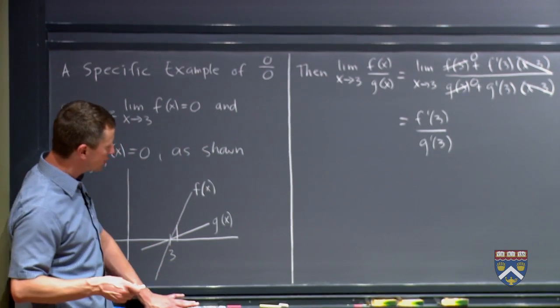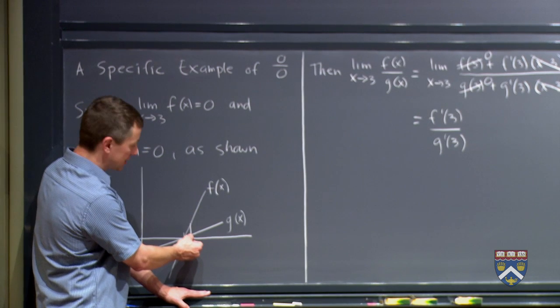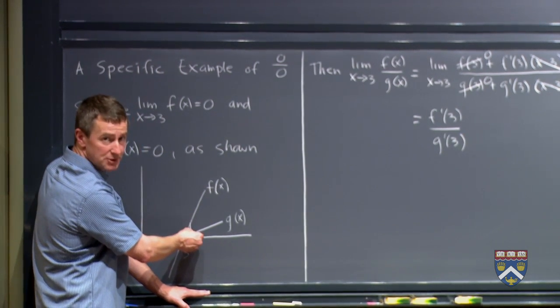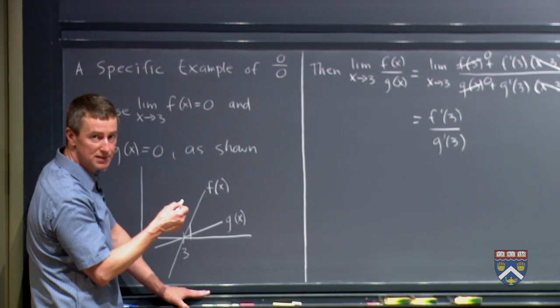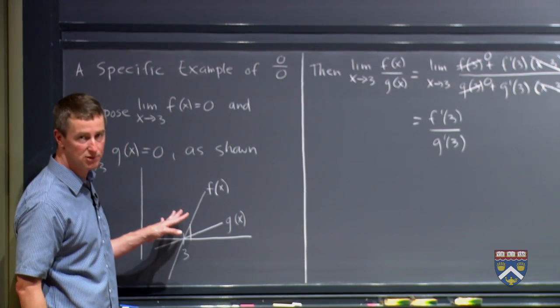And the amount that the f graph will have gone up is dependent just on the slope of f. So as I tried to draw it here, f is 4 times as steep as g. So when I go over a little bit in the x direction, whatever amount I go up on the g(x) graph, I go up 4 times as much on the f(x) graph. And that's because the slope of f is 4 times the slope of g.